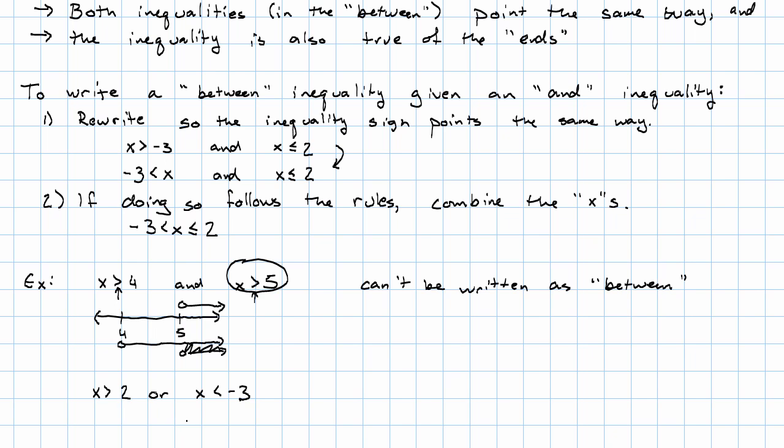If we have an or inequality, we can't write that as between. Because writing something like this means that x is between the two end points. It means that we have to follow both rules.